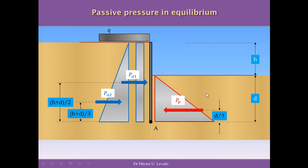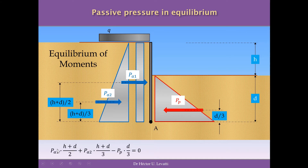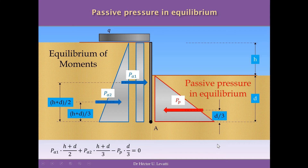Moments are defined as forces multiplied by their perpendicular distances. Once we have all distances and forces, we write the moment equilibrium equation: PA1 times (H+D)/2 is a positive clockwise moment, plus PA2 times (H+D)/3 also positive clockwise, minus the restoring moment PP times D/3 — and all of this equals zero by equilibrium. Expressing the passive pressure in equilibrium in terms of PA1, PA2, and the distances gives the governing equation.